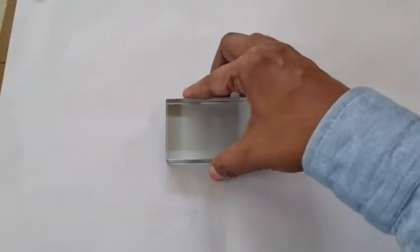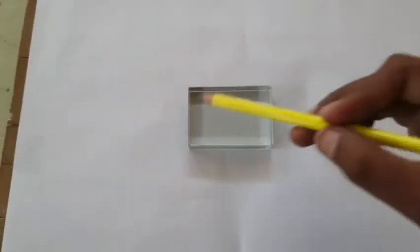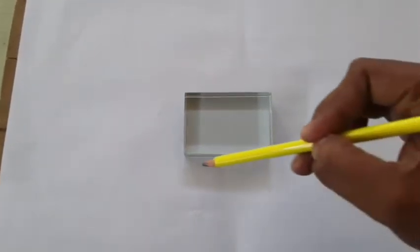So now that we have fixed this drawing sheet, let us place the glass slab in the center. And with the help of a pencil we are going to mark its outline.